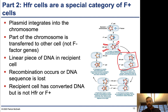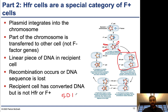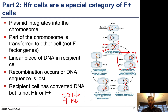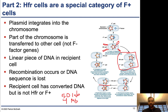The first gene transferred is the one nearest to the integration site — capital A — then capital B, and so on. You're transferring a large amount of DNA from one cell to another. However, the chromosome is enormous: a plasmid is about 50 kb, but a chromosome is on the order of 4 megabases — four million base pairs versus 50 kb. Eventually something goes wrong and the process stops, so only a piece of the chromosome gets transferred before conjugation ends.